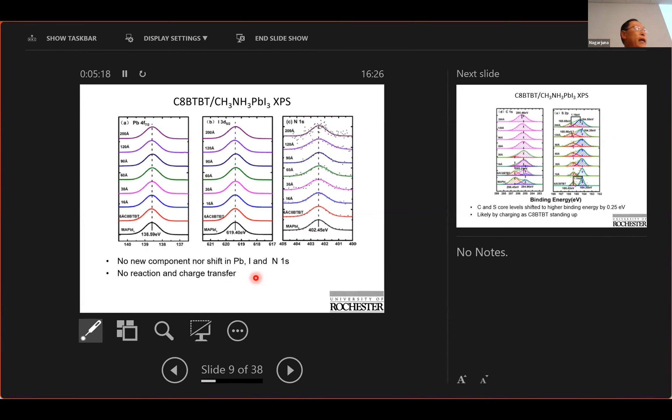We can also look at deep core levels and look at what's really going on in this interface. In this case we use x-ray photo emission spectroscopy to look at deep core level and here's lead and iodine and nitrogen. All three are in this perovskite and we can see there's no change so there's no reaction, no energy level shift. There's no charge transfer.